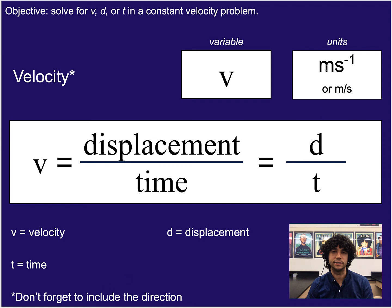So you'd say something like 10 meters per second north, or 22 miles per hour south. The units are still meters per second — those are typical units in physics — however you can also use kilometers per hour or any other length per time.